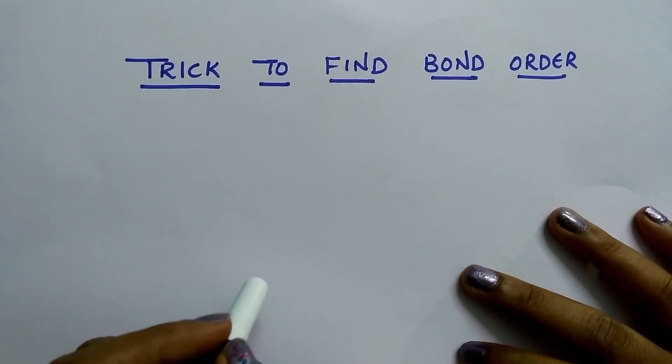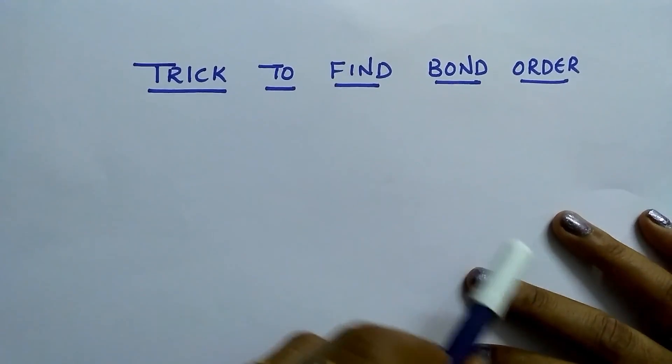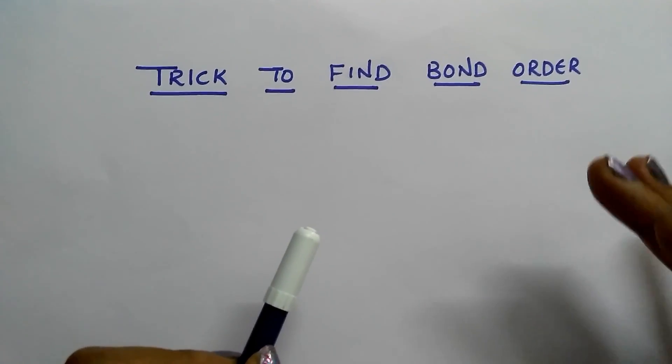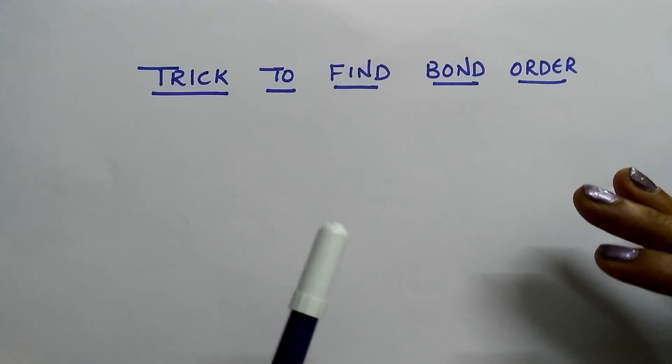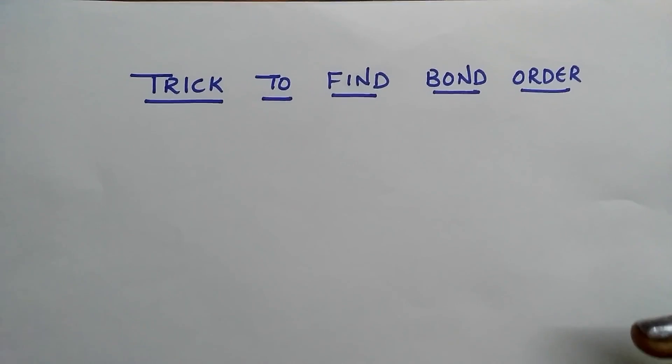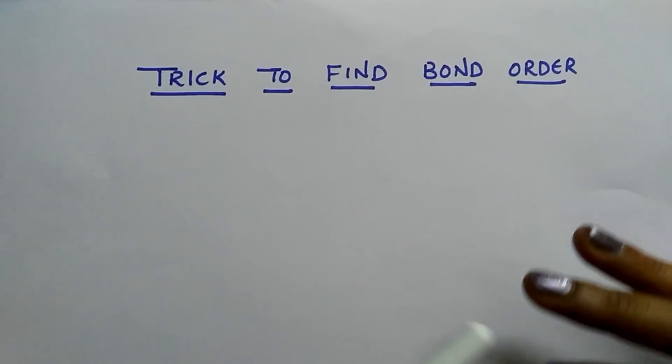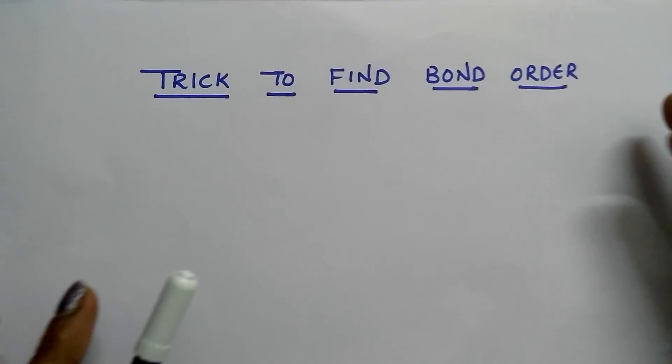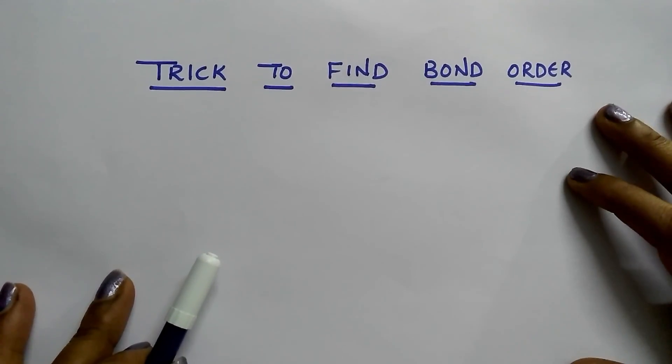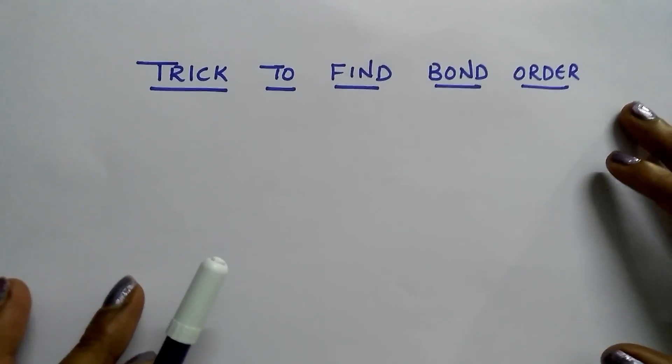Hi students, today I am going to explain the trick to find the bond order. It's an amazing trick. You just need to know addition, that's enough. Like 5 plus 5 equals 10, 7 plus 7 equals 14. You can find the bond order for a molecule or ion without using molecular orbital theory. In the exam it will take time using molecular orbital theory to find the bond order, but by using this trick you can find it easily. Let us see.